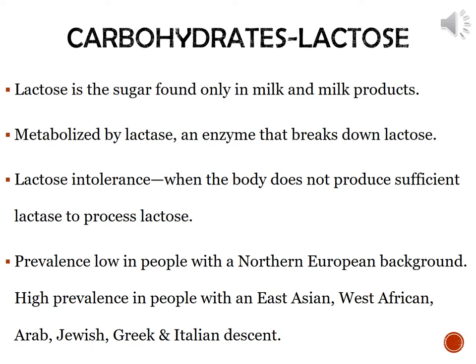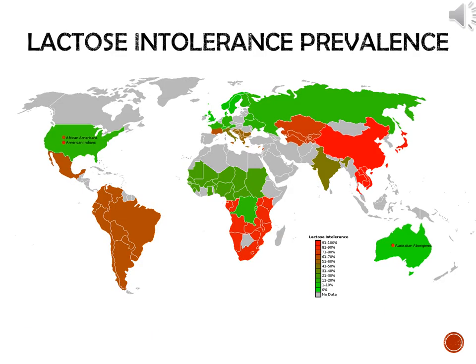There is a relatively low prevalence of lactose intolerance in people with a northern European background; however, people from East Asian, West African, Arab, Jewish, Greek, or Italian descent have a relatively high risk. In the United States, most of the population has a low prevalence of lactose intolerance, but African Americans and American Indians have a much higher prevalence.